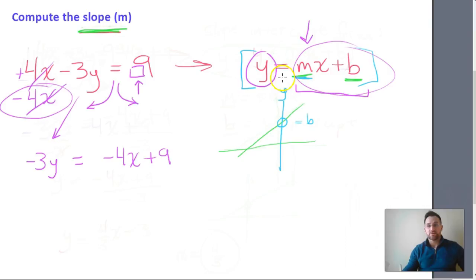But y is not by itself yet. So this says y equals mx plus b, and we can't right away jump to a conclusion and say we have m, it's negative 4. Well no, y has a negative 3 over here attached to it. That's negative 3y's.